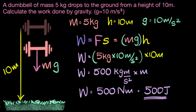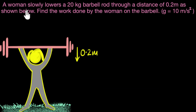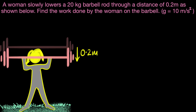Let's go ahead and solve another one. A woman slowly lowers a 20-kilogram barbell rod through a distance of 0.2 meters. Find the work done by the woman on the barbell. She's exercising and lowering that barbell rod. We need to calculate how much work the woman does on the barbell.